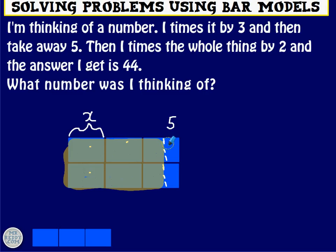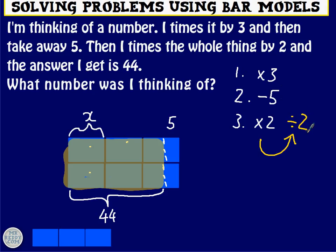So this up to here is 44, and it includes the top row as well. What were the three steps that we took to get there? First one, times by 3. Second one, take away 5. Third one, times by 2. So in reverse order, divide by 2, add 5, divide by 3.